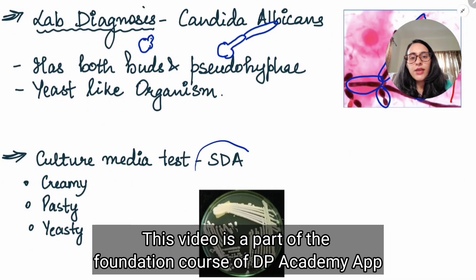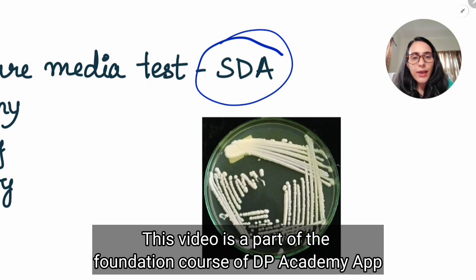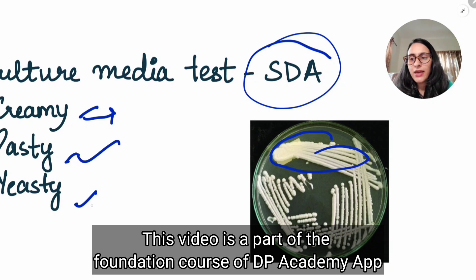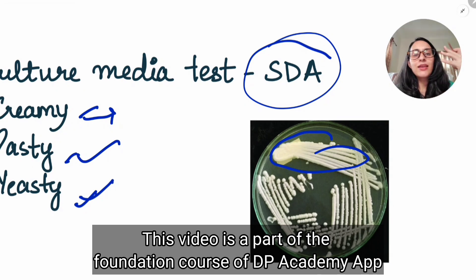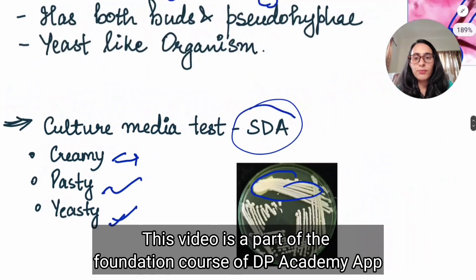For culture, we use SDA agar. On the SDA agar, you can find creamy, pasty, yeasty colonies. Creamy means it is cream-like, pasty means it is in paste form, and yeasty means the odor of these colonies smells like yeast — similar to the smell in a bakery because of the yeast used for fermentation. So a bakery smell comes from the colony when you grow Candida.